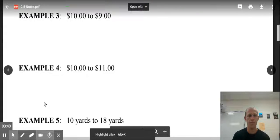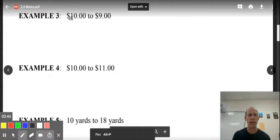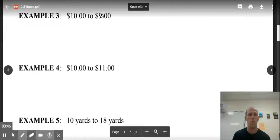Let's keep on going. $10 to $9. If I subtract 10 and 9, I will get out 1. So my change is $1. The original was 10. And that equals 0.1. Convert it to a percent from a number. That would be 10%. We went down. So it's a decrease.